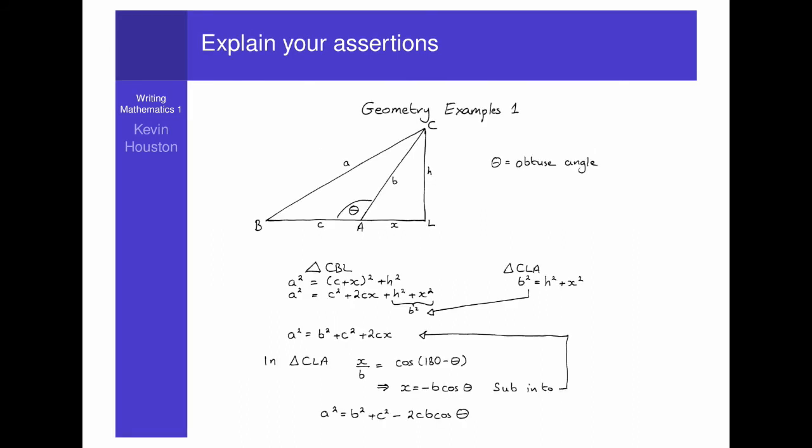Turning to our students' proof of the cosine rule, we have already looked at the first few lines. In triangle CBL, we have a squared equals c plus x all squared plus h squared. And in triangle CLA, we have b squared equals h squared plus x squared. But what about the next line? It says simply, a squared equals c squared plus 2cx plus h squared plus x squared. Is this a deduction from the diagram? Certainly the first two equalities were.